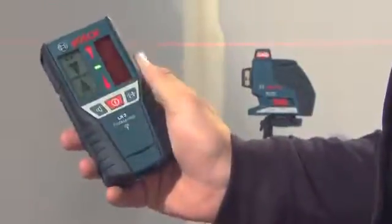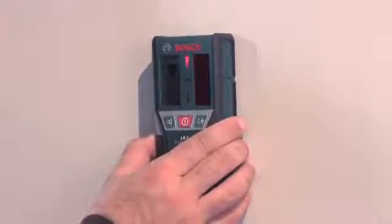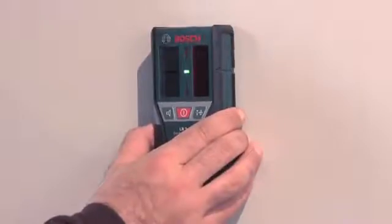With the help of the receiver, the GLL 380P Professional has a range of up to 80 meters diameter. The receiver uses light-emitting diodes and acoustic signals to indicate when the laser beam is perfectly aligned.